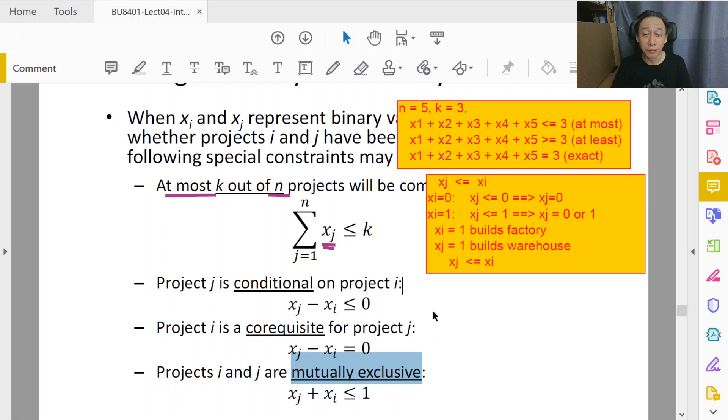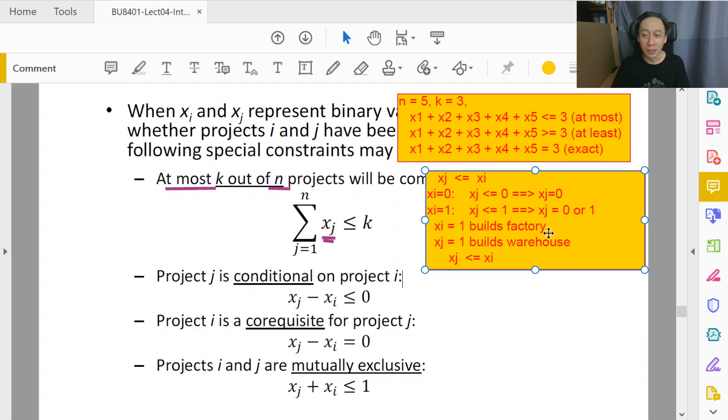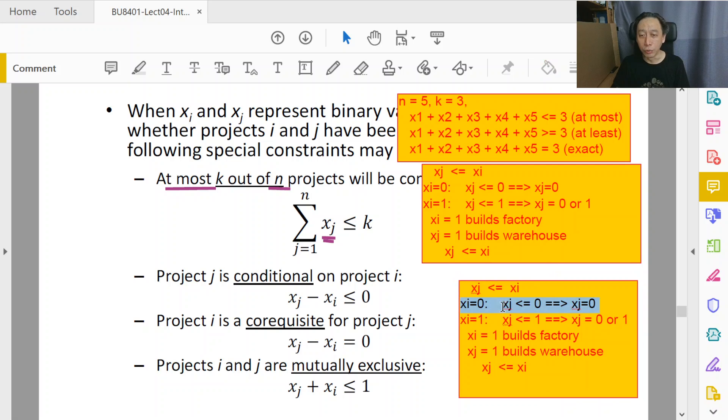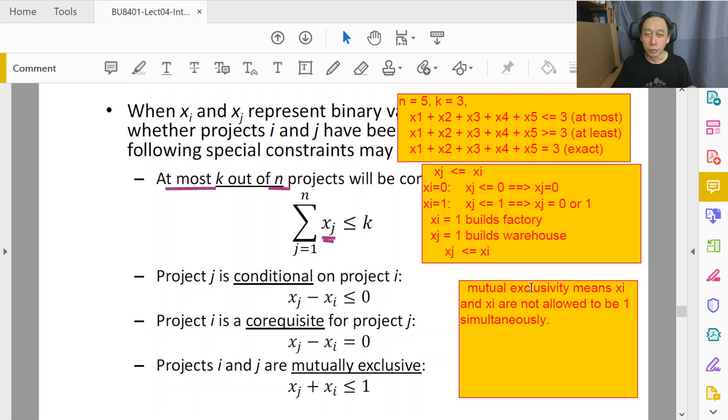And finally, we have this also rather expressive case where projects i and j are mutually exclusive. So what does that mean? It means that when you do project i and j, mutual exclusivity means that xi and xj are not allowed to be one simultaneously. That's all. So xi and xj can be 0, 0, no problem. Do i, don't do j, that's okay. Do j, don't do i, that's okay. Do i and j together, no, that's not okay.